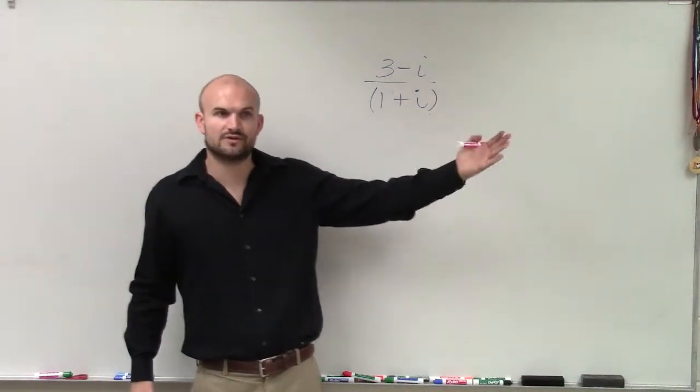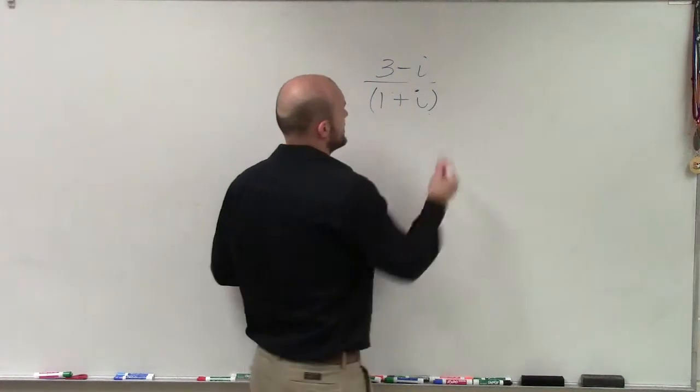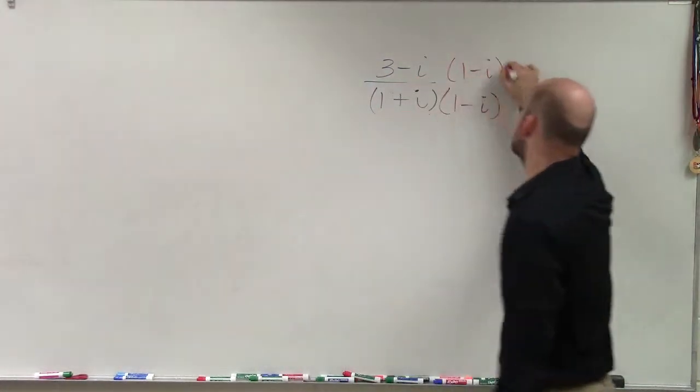Or if it was irrational, you could change the sign for the irrational unit. So therefore, I multiply by the conjugate, which is 1 minus i over 1 minus i.